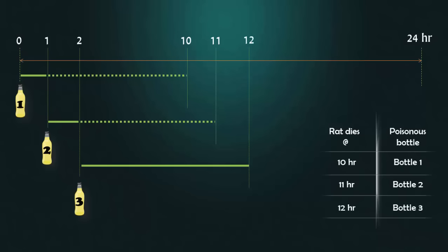Now again, our brain is forced to feed the sample from bottle 4 at the end of 3 hours, but that's not required. Because if the rat survives at the end of 12 hours, then eventually the poisonous bottle is bottle number 4. And this is the optimized solution.